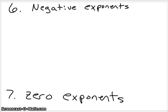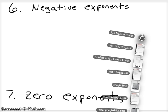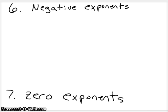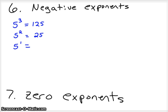The much more interesting rule is the negative exponent. The best way to think about negative exponents is to start with a numeric example. If we have 5 to the third, that's 125. 5 to the second is 25. 5 to the first is 5. Notice as we work our way down, the pattern is to divide by 5 each time.